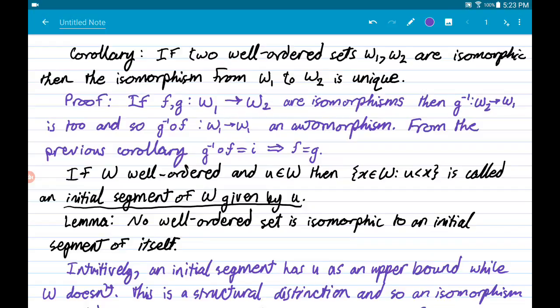If you have two well-ordered sets that are isomorphic, then the isomorphism must be unique. This follows quite nicely from the previous corollary, but I think the author doesn't even give the proof because it seems probably a bit obvious, but I'll go ahead and give it just to make sure it's clear. Take any two functions which both are isomorphisms from w1 to w2.